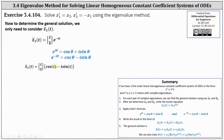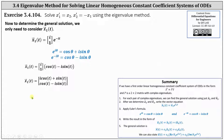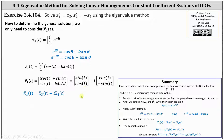E to the power of negative i t equals cosine t minus i sine t. Substituting, we have x one of t equals the eigenvector [i, 1] times the quantity cosine t minus i sine t. Multiplying through, the first row of the two-by-one matrix is i cosine t plus sine t, and the second row is cosine t minus i sine t. Writing this as a sum of two matrices separating the real and imaginary parts gives x one of t equals [sine t, cosine t] plus i times [cosine t, negative sine t].